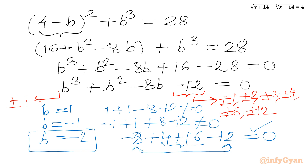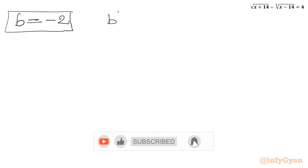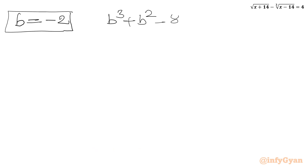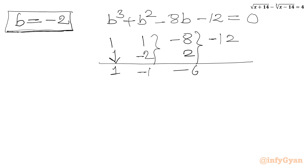Now I will use the synthetic division method with b = -2 as our base solution. The cubic equation is b cubed + b squared - 8b - 12 = 0, with coefficients 1, 1, -8, -12. Bringing down 1, multiply by -2 gives -2, add to get -1. Multiply -2 by -1 gives 2, add to -8 gives -6. Multiply -2 by -6 gives 12, add to -12 gives 0.